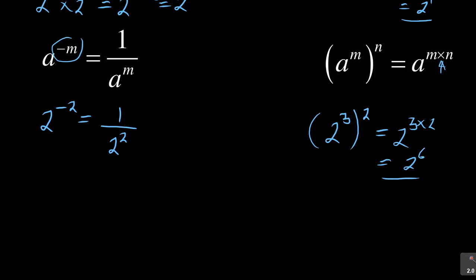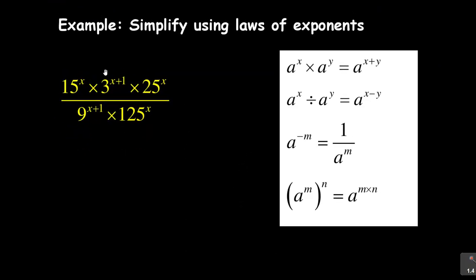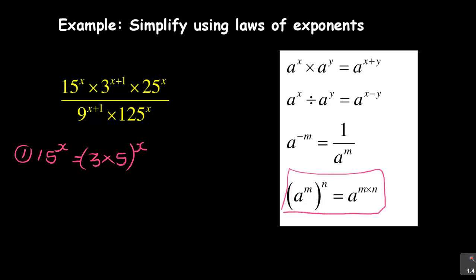These are the basic laws you need to know. Now I've got an example where I want us to apply all these laws. The first one we're given is 15 to the exponent x, and I want to split it into its individual parts. If I write 15 as a product of its prime factors, it is 3 times 5. So this becomes 3 times 5, the whole thing to the exponent x. Using the last law — when there is a bracket, you multiply the exponents — by default there is a 1 there.